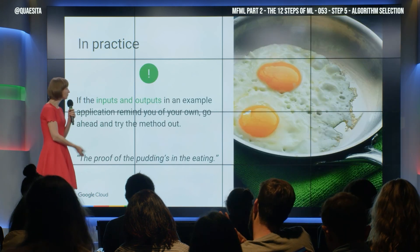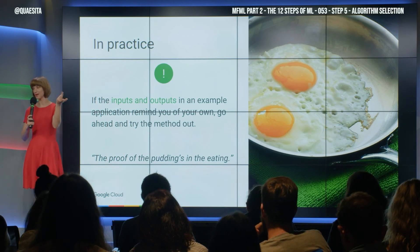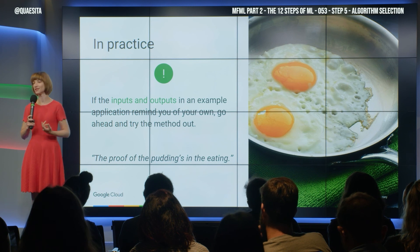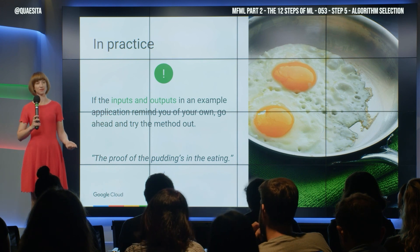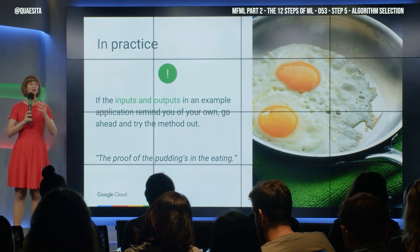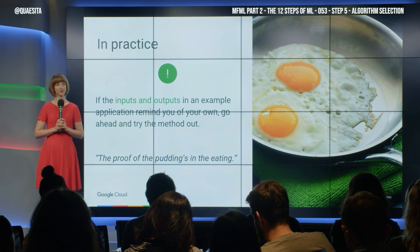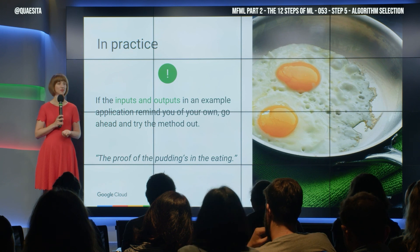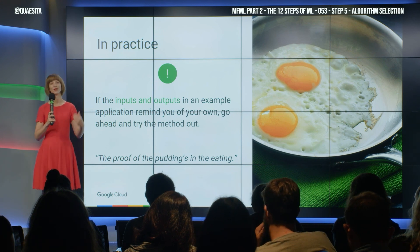So in practice, if the inputs and outputs of an example that comes with that software package look kind of like your inputs and outputs, and it doesn't take much fuss to re-wrangle your dataset to shove it in there, go for it. See if it works. If it doesn't, try something else. Iterate towards the solution — that's what you're doing. Let go of anxiety. My advice is not to be the person who suffers most in machine learning: the perfectionist. Perfectionists have a really hard time here — they're anxious about getting it right first time. You're never going to do that. Free yourself to make a glorious mess, because that's what it takes to succeed in the end.